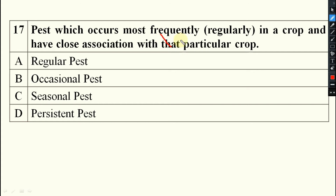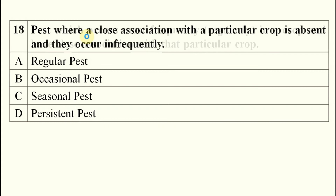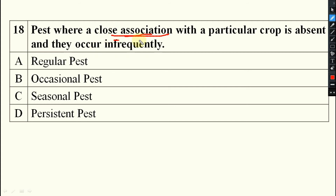Now the questions on categories of pest. Pest which occurs most frequently in a crop and has a close association with it — that will be your regular pest. Pest where a close association is not there, meaning it is absent with a particular crop and occurs infrequently — those are known as occasional pest.